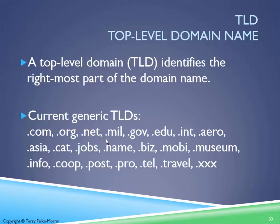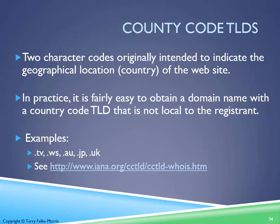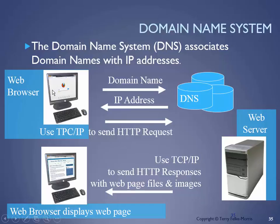Top-level domain names identify the rightmost part of a domain name. My email is jscott@blackhawk.edu — so that's a dot-edu. Google is google.com. You may have seen dot-org, dot-net, dot-mil for military, or dot-gov — the White House is whitehouse.gov. Today many sites use country codes, a two-character code basically intended to give a geographic location.